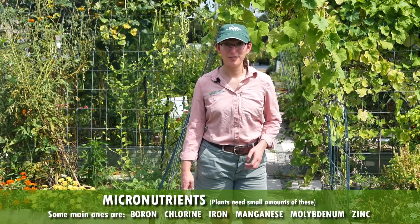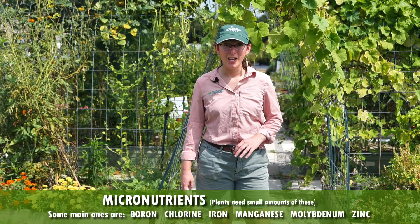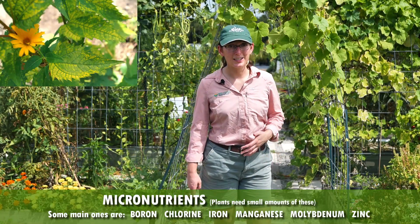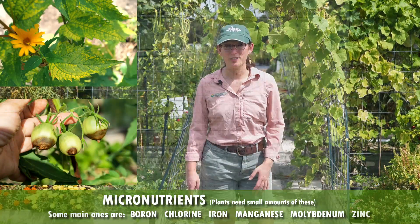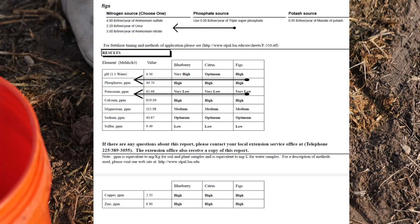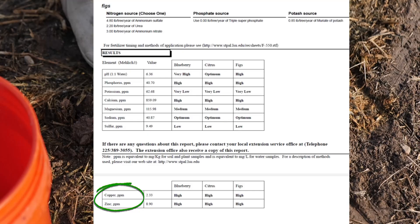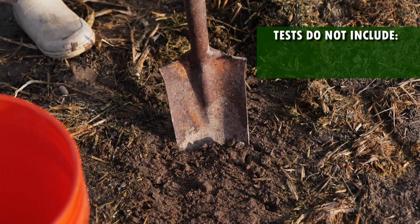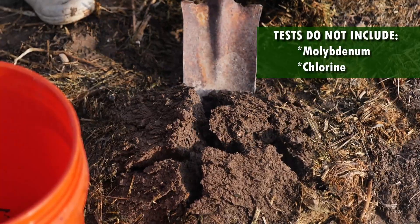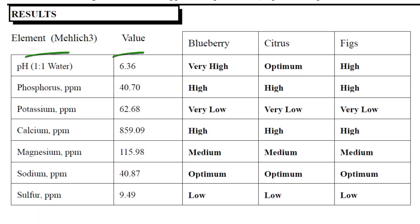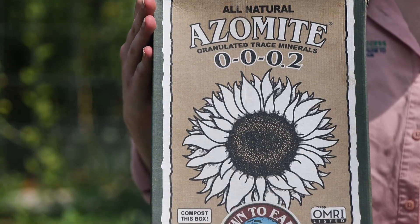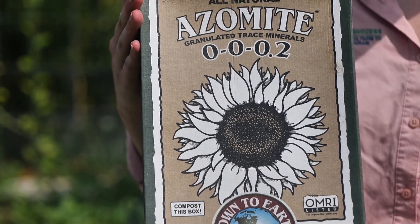Then there are micronutrients, which are called micro because plants only need a small amount of these, but they are still essential. Deficiencies in these can lead to yellowing leaves, poor fruit set, or stunted growth. If you get the routine soil test, you will get all the macronutrients plus zinc and copper, two of the micronutrients. Unfortunately, we're not able to test for molybdenum and chlorine, but that's okay. If your soil is within the recommended pH range, you likely have those elements already present in your soil. If micronutrients are needed, you can add a micronutrient mix like azomite.